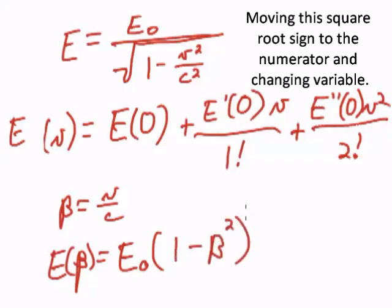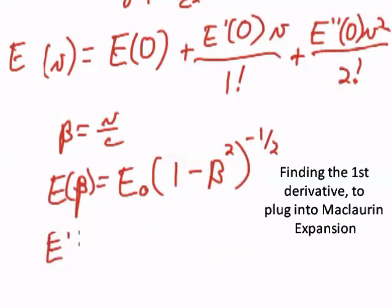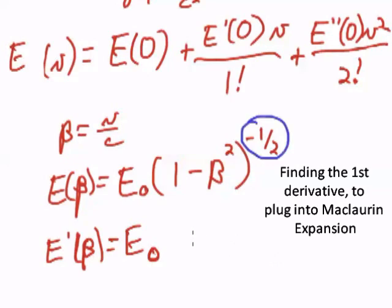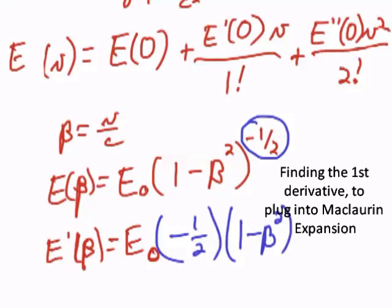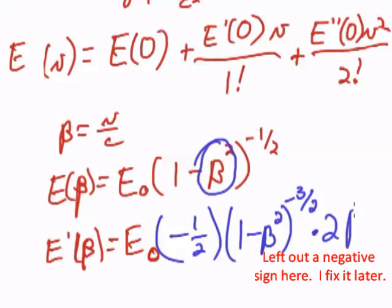Now the first derivative of this, E prime of beta, is going to be E sub 0 times negative 1 half times 1 minus beta squared to the negative 3 halves, times the derivative of the inner part, 2 times beta.